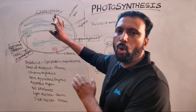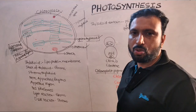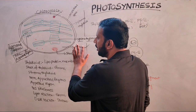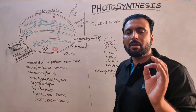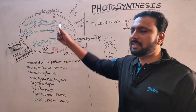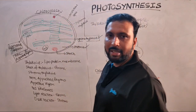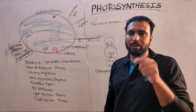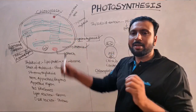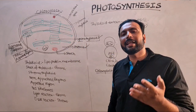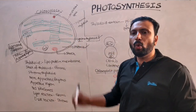Inside the chloroplast, a homogeneous matrix is present. That homogeneous matrix is called stroma. This stroma contains 70S ribosomes mainly; due to the presence of 70S ribosomes, protein synthesis takes place. It also contains DNA — single circular DNA like a prokaryote. That is why the chloroplast is a semi-autonomous cell organelle, also called a prokaryotic cell in a eukaryotic cell, or cell within a cell, due to the presence of its own DNA.